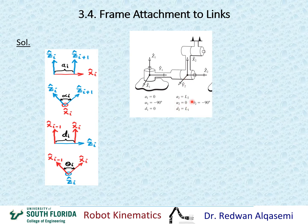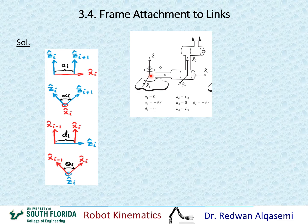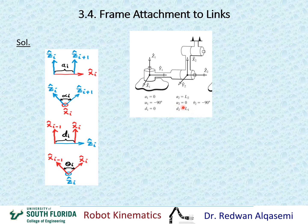For d1, it is the distance between x0 and x1 along z1. We can assume x0 is the same as x1, so the distance between them along z1 is zero, giving d1 equals zero. For d2, we look at the distance between x1 and x2 along z2. Along z2, that distance is l1 — the distance from this joint to the next — so d2 equals l1.